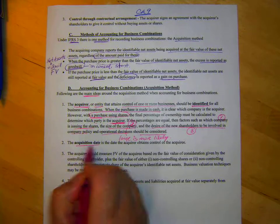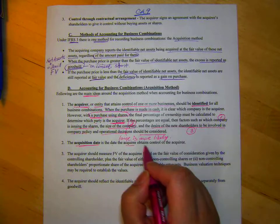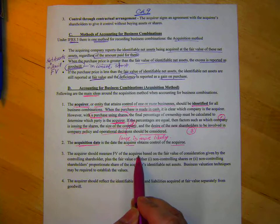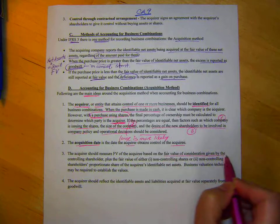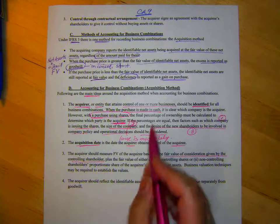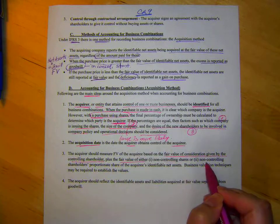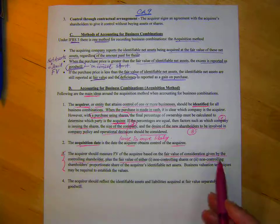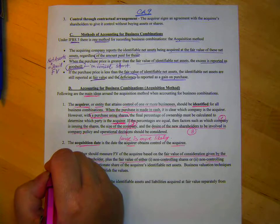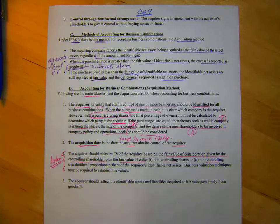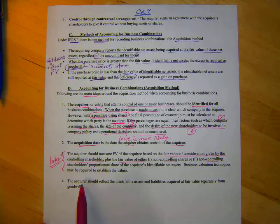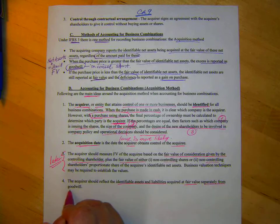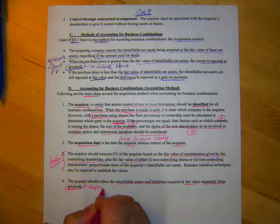The second thing is the acquisition date is the date the acquirer or parent obtains control of the acquiree or subsidiary. The acquirer should measure fair value of the acquiree based on the fair value of consideration given by the controlling shareholders plus fair value of either non-controlling shares or non-controlling shareholders proportionate share. Oh, that's a lot of stuff. You know what? We're not even going to do that. We don't know what NCI is yet, so don't muddy your brain up with this. The acquirer should reflect the identifying assets acquired at fair value separately from Goodwill. So that's going to be a separate account.